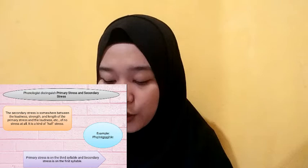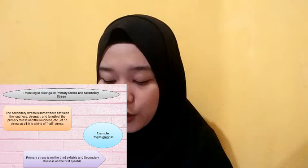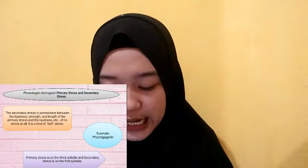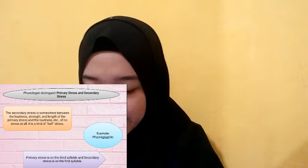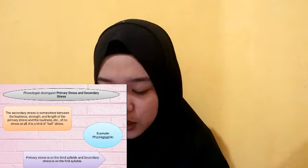Phonologists distinguish primary stress and secondary stress. The secondary stress is somewhere between the loudness, strength, and length of the primary stress and that of no stress at all. For example, in 'photographic', the primary stress is on the third syllable and the secondary stress is on the first syllable 'po'. So primary stress falls on 'graph' and secondary stress is on the first syllable 'fo'.